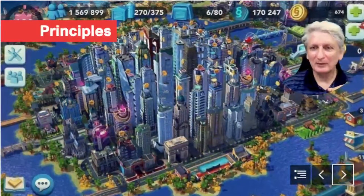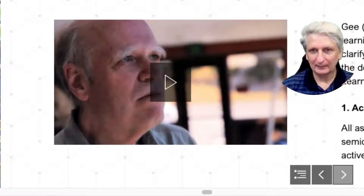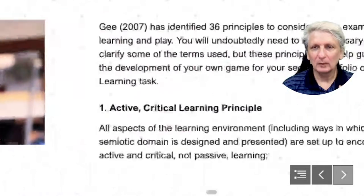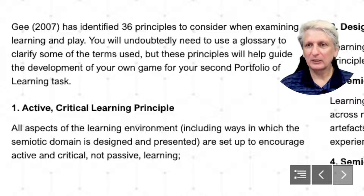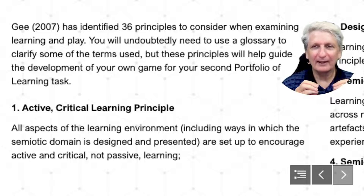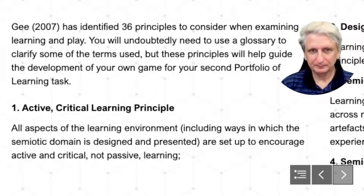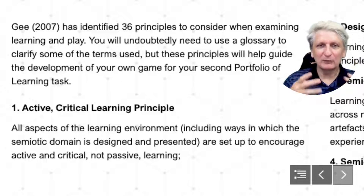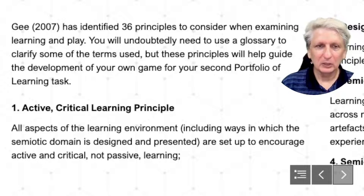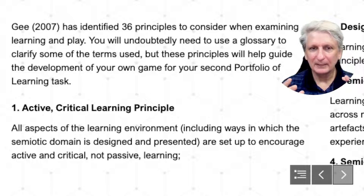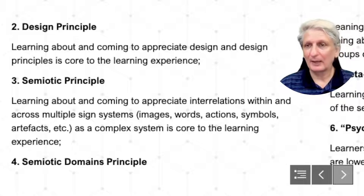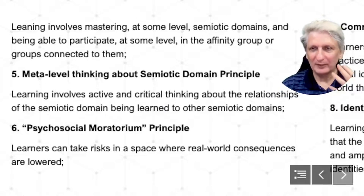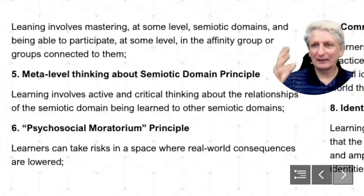As we examine further detail about the concepts of play, there are various principles related to play, identified by Gee — there are 36 of these. The first is that play can be part of being involved as an active critical learning process. The way that we set up situations can be active and not passive. There are aspects of design to play, but also aspects of design to learning and how we learn with play. There are meta-level aspects where we think about relationships between other elements at a higher level.